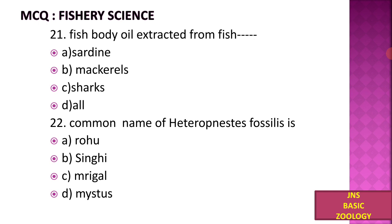The first multiple choice question is: fish body oil is extracted from which fish? A) Sardine, B) Mackerel, C) Shark, D) All. The correct answer is D — all. Sardine, mackerel, and sharks are all used to extract body oil.